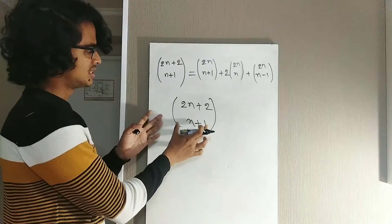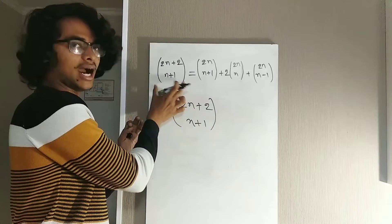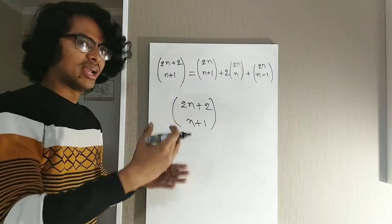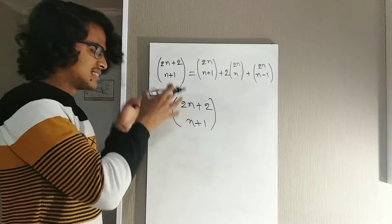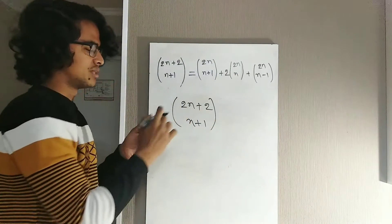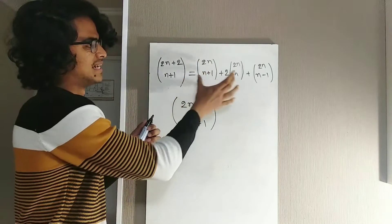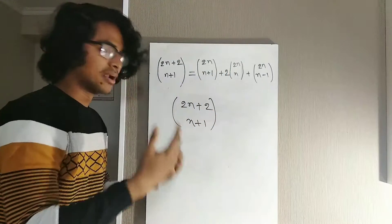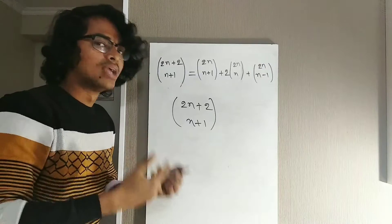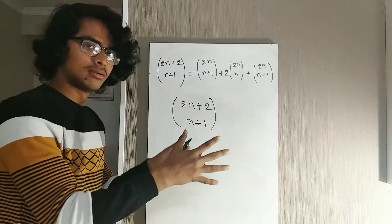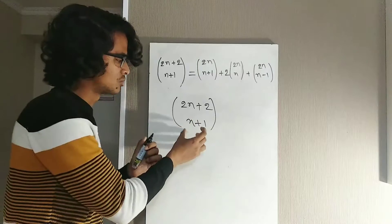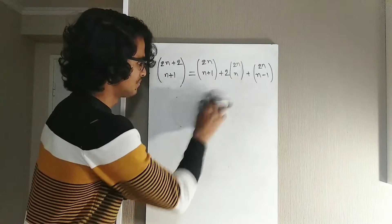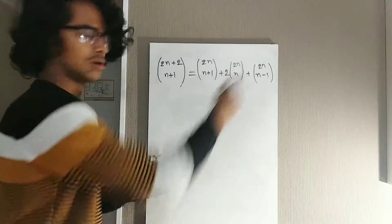As you can see, we've already found the left side of the identity. Now we have to count the same thing in a different way and show it equals the right-hand side. Let me define clearly what we are counting: we are counting the number of ways we can choose the team — choose n+1 players out of the squad.